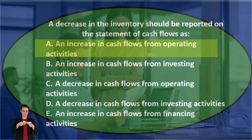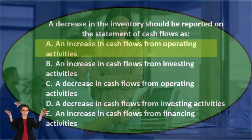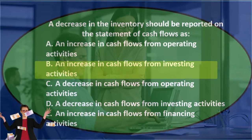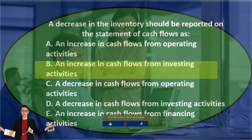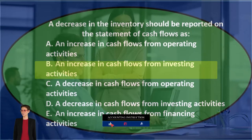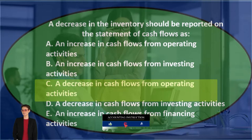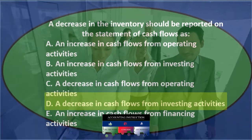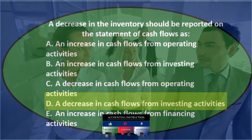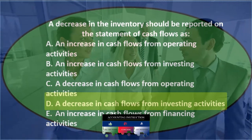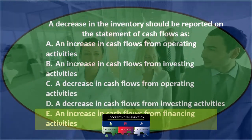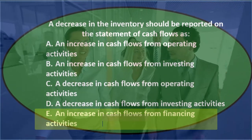A: an increase in cash flows from operating activities. B: an increase in cash flows from investing activities. C: a decrease in cash flows from operating activities. D: a decrease in cash flows from investing activities. And E: an increase in cash flows from investing activities.